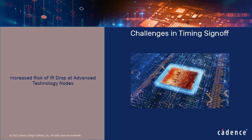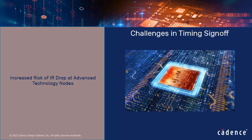There are several big challenges that arise during silicon sign-off, such as increased risk of IR drop at advanced technology nodes. IR drop analysis is so important because resistance increases with advanced nodes and power increases with high operating frequencies, both resulting in IR drop violations.